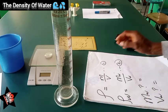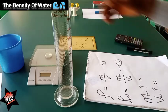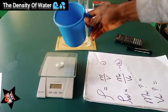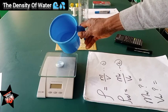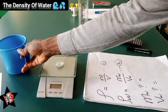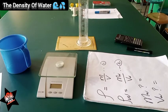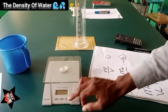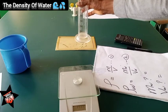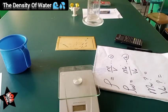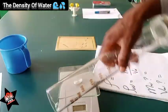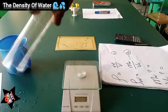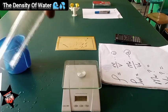First, we want to find the mass of water. It is practically impossible to carry the water and spill it on the weighing balance directly — that will not work. So we have to use the container, a measuring cylinder, to help us find the mass of water. What we do is find the empty weight of the measuring cylinder by placing it on the weighing balance.